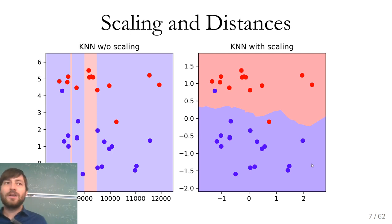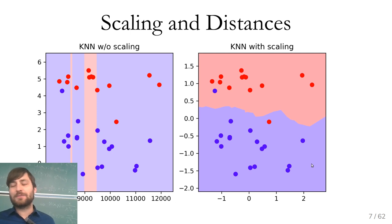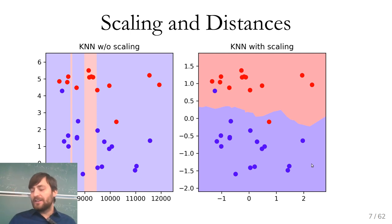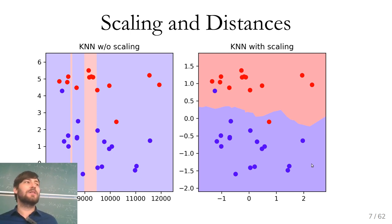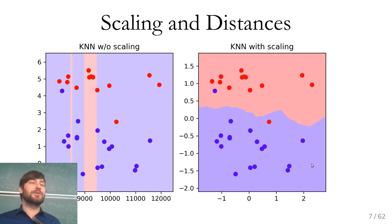Usually we don't really know a priori which features are important. If you know that for your dataset only one axis matters, then don't include the unimportant one. It's very rarely useful to have features on different scales because it will implicitly assign different importances to different features, determined by something arbitrary like what units you use.